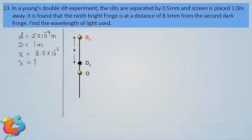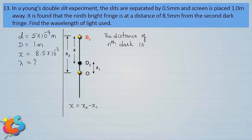Let the distance of the 9th bright fringe be X2 and the distance of the 2nd dark fringe be X1, so X equals X2 minus X1. The distance of the nth dark fringe from the center is Xn equal to (2n minus 1) lambda D divided by 2d. For the 2nd dark fringe, n equals 2, giving X1 equal to 3 lambda D divided by 2d.